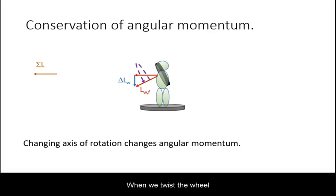When we twist the wheel down to the left, we are changing its angular momentum. The direction of this change is straight down.